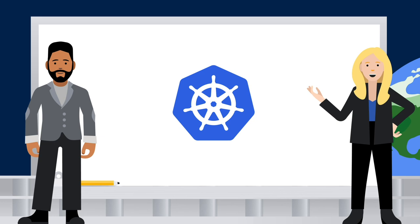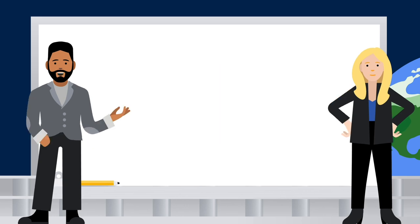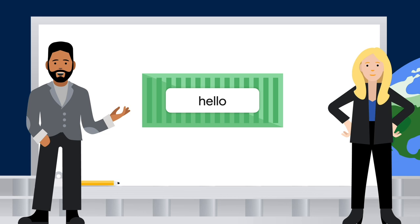We've already talked about a few API objects like pods and nodes, but there's also services, deployments, secrets, and many more. Why don't we start simple and use an example application? We said that containers are the first step to using Kubernetes, so let's start with this container I built to run my Hello app. This app is really simple — it just returns hello whenever I ping it on its local IP on port 8080.